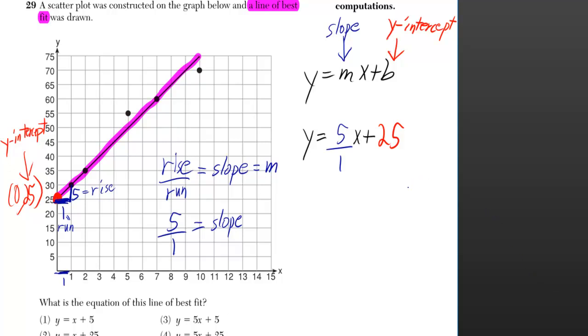A scatter plot was constructed on the graph below and a line of best fit was drawn. What is the equation of this line of best fit? If we want the equation of a line, then we can find the slope and the y-intercept.